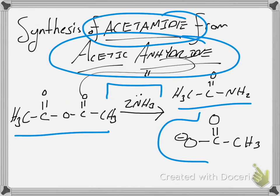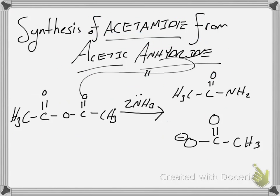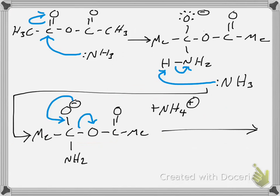Synthesis of acetamide from acetic anhydride. We have acetic anhydride, two equivalents of ammonia. And what happened first? The first equivalent of ammonia attacked either one of these carbonyl carbons. We decided to pick the carbonyl carbon here on the left.